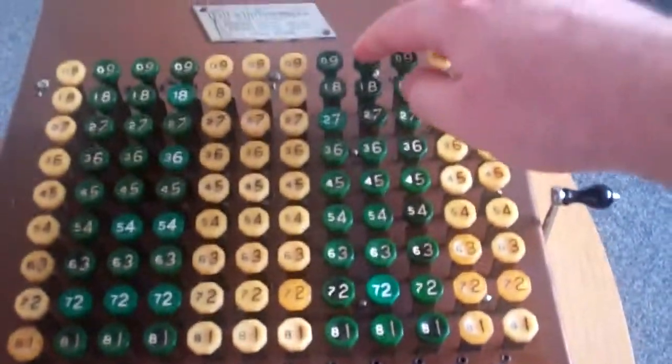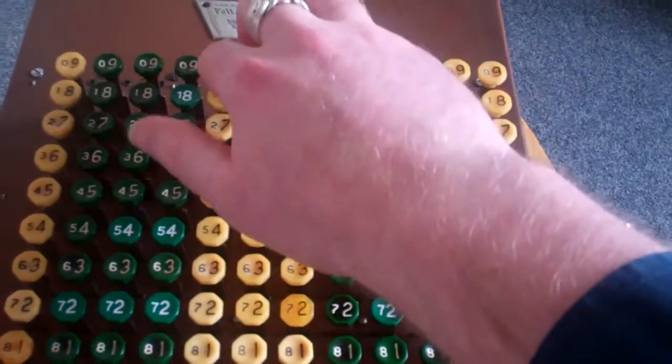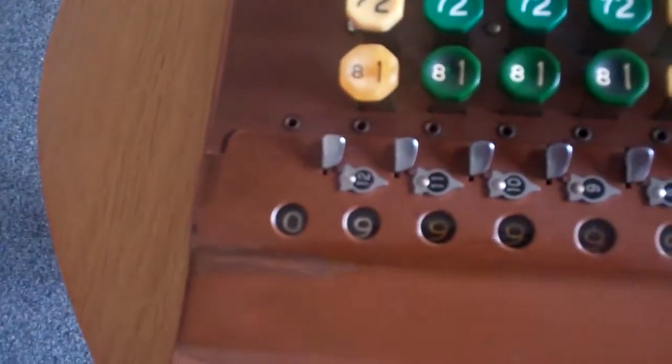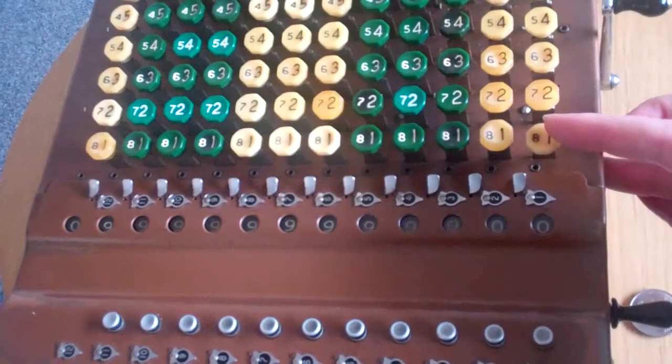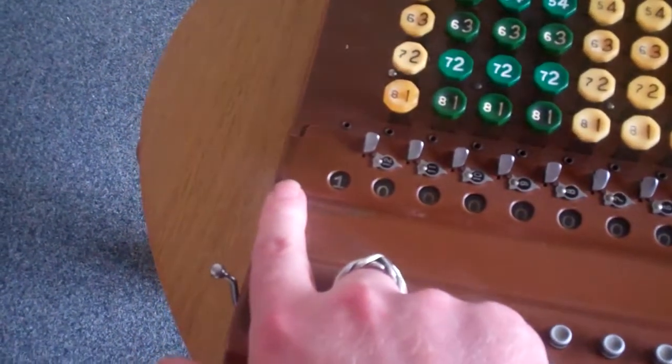Let me just do something quite fun. Let me just press all the 9s. So now I have 999999. And if I now add the 1, you see, the carry happens automatically all the way to the top.